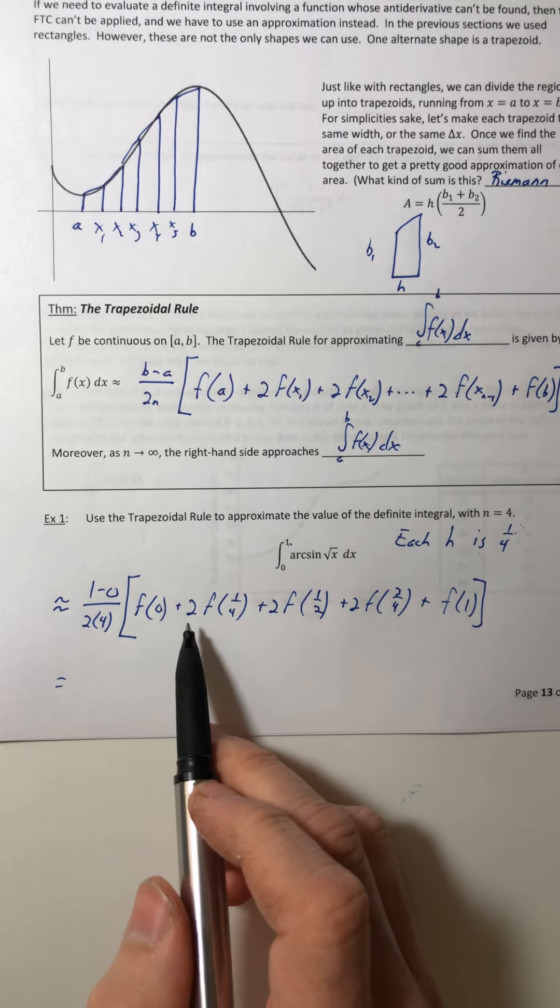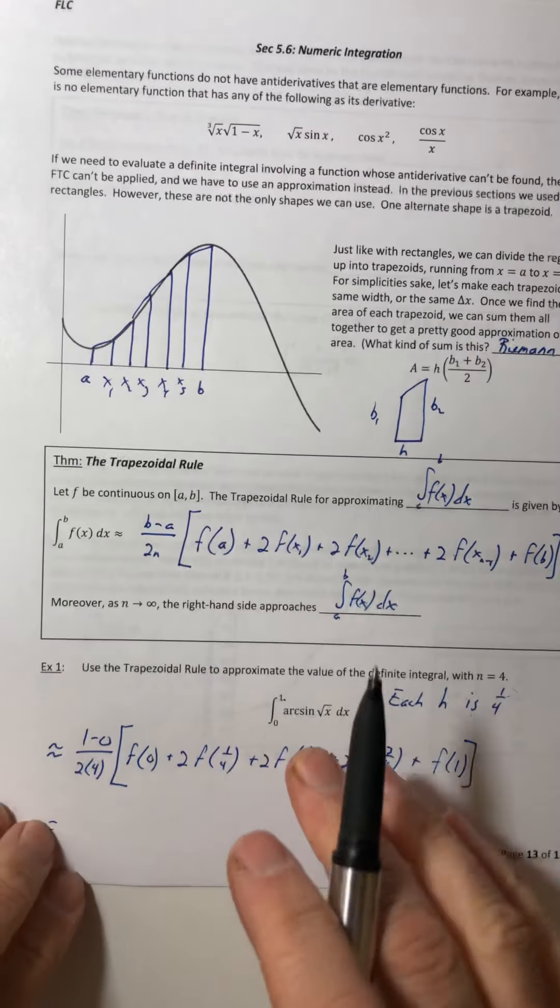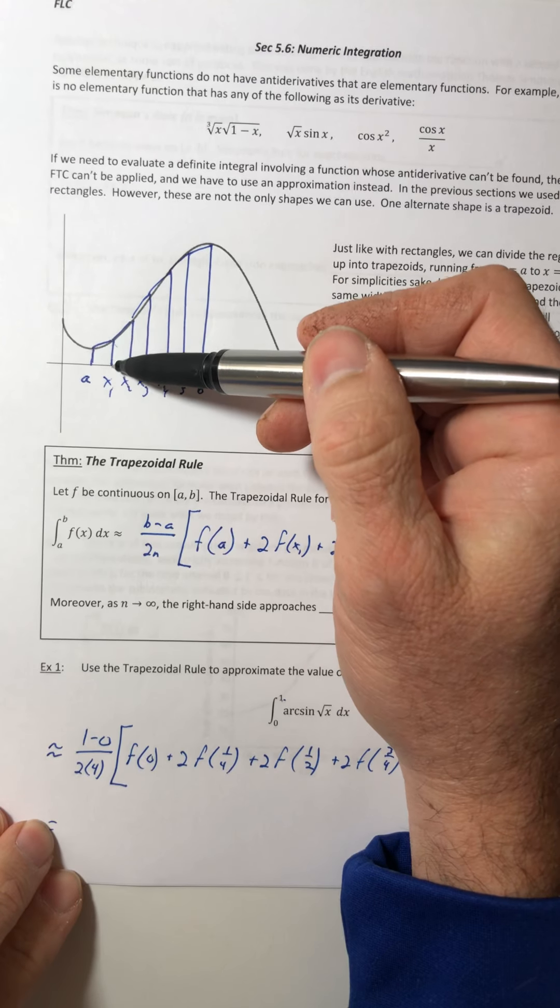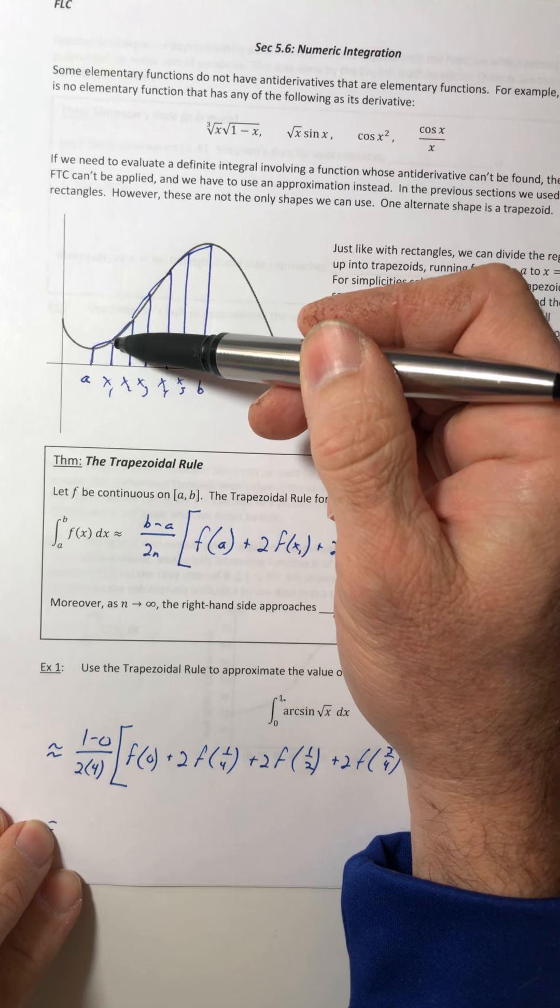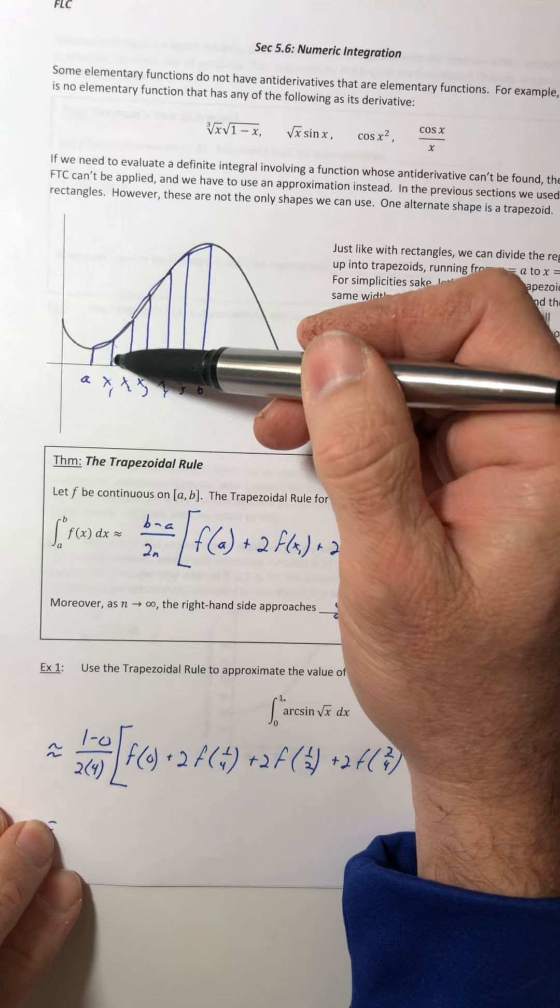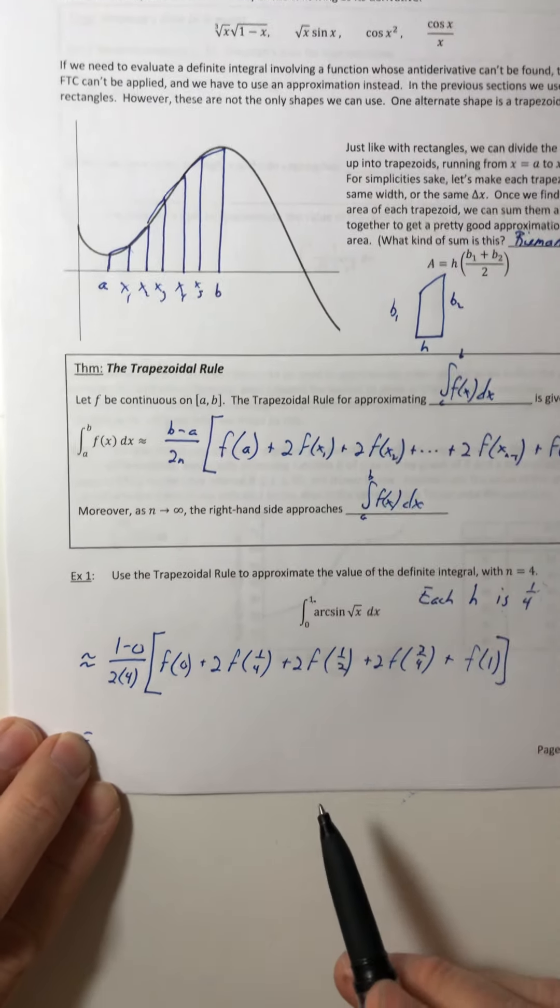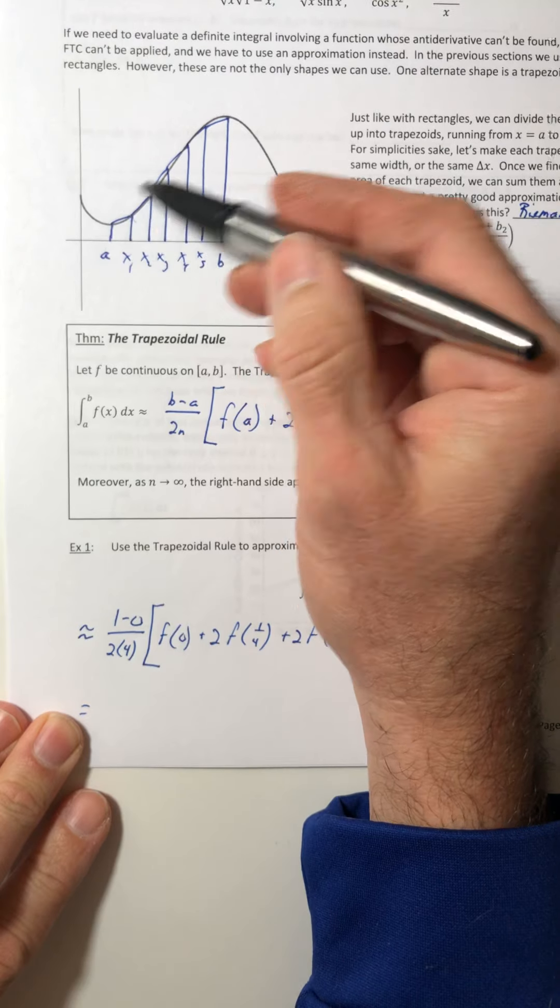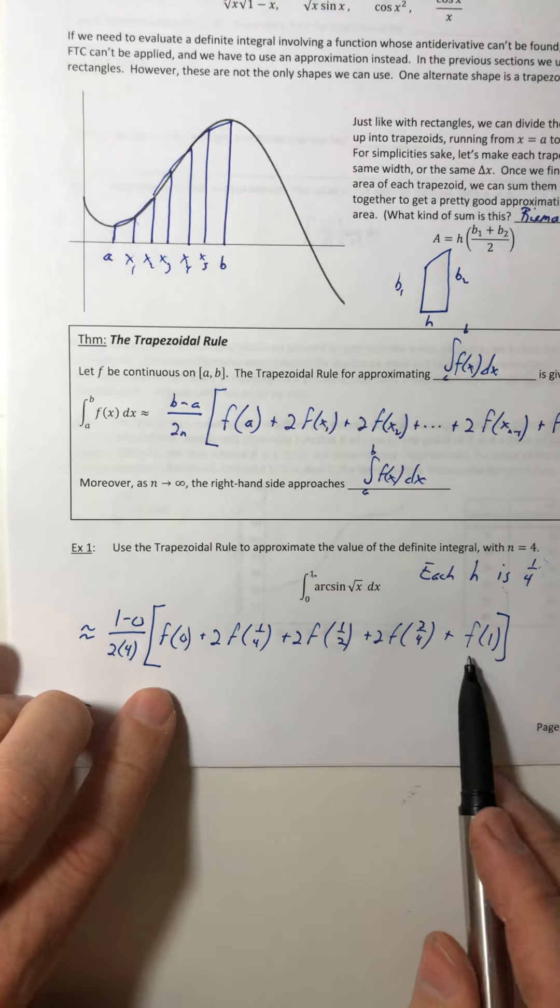And the lower bound and the upper bound when you plug them in they do not have a two in front, but all the other ones do. And the reason why they have, like there's two of them, is because when you start using the area of the trapezoid, like x sub one is used twice. You use it for this trapezoid but then you also use it for that one. But the first one and the last one they're only used in one trapezoid, so that's why they don't have a two.